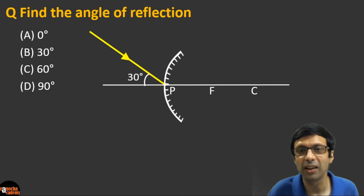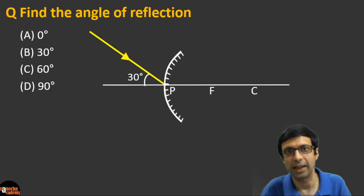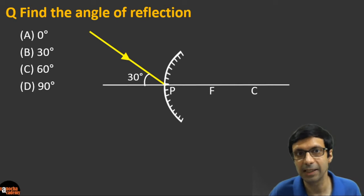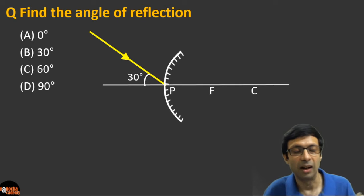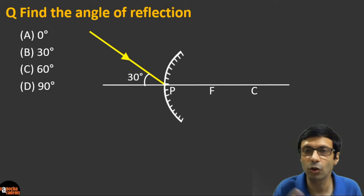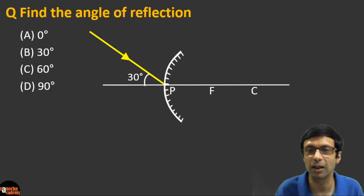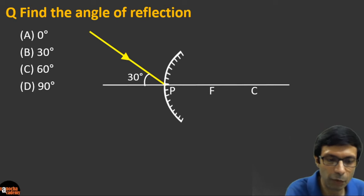Superb! Now try this question: find the angle of reflection in this case. Is it (a) zero degrees, (b) 30 degrees, (c) 60 degrees, or (d) 90 degrees? Please pay full attention — we're going over important questions and concepts.